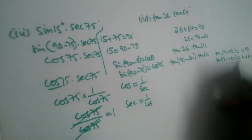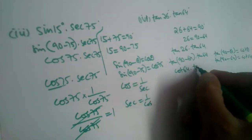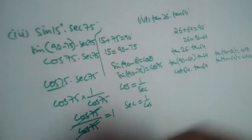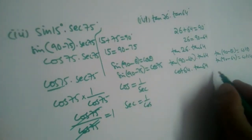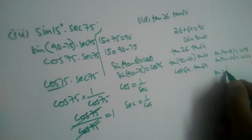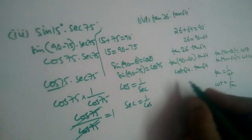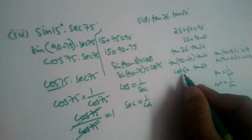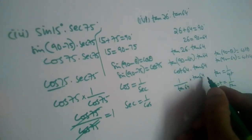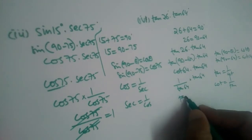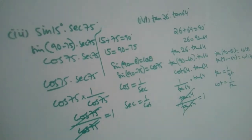Using the formula tan(90° - θ) = cot(θ), tan(90° - 64°) becomes cot(64°). So we have cot(64°) × tan(64°). Since cot and tan are reciprocal functions, we write cot(64°) as 1/tan(64°). This gives 1/tan(64°) × tan(64°), and tan(64°) divided by tan(64°) equals 1.